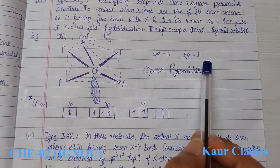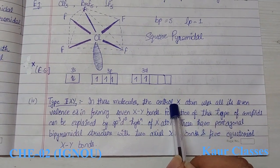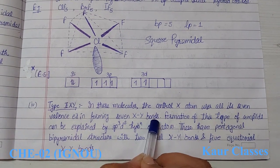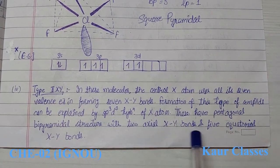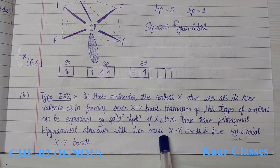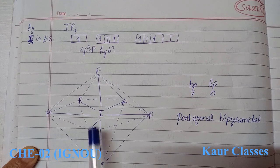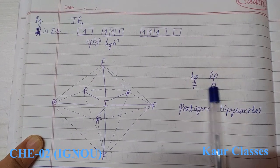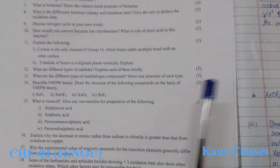The fourth type is XY7. In these molecules, the central atom X forms seven bond pairs with no lone pair, resulting in sp3d3 hybridization. The structure of IF7 has seven bond pairs — two axial and five equatorial positions — giving a pentagonal bipyramidal geometry.